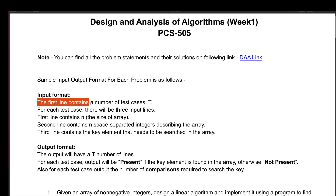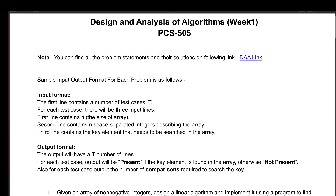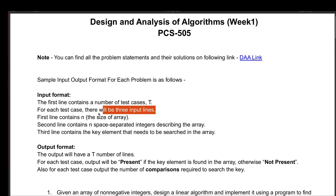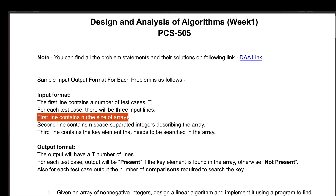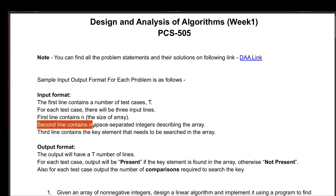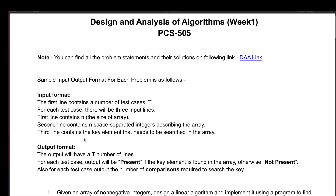You can see we have a first line that contains number of test cases, that is t. For each test case we have three input lines — so if t is one we have three more lines, if two then six more lines, if three then nine more lines and so on. The first line contains n (size of array), the second line contains n space-separated integers, and the third line contains the key element that needs to be searched.